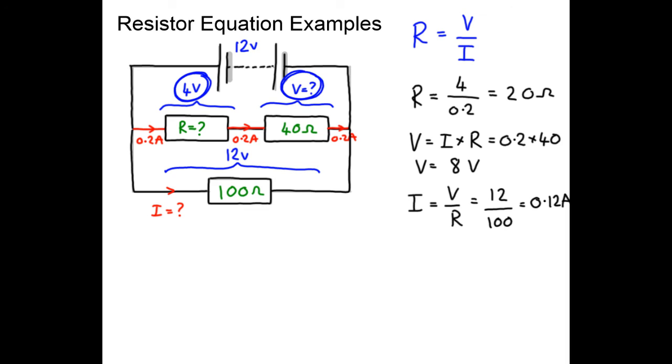How much current flows from the battery? Well, we know the current here is 0.12 amps because we just worked it out, and therefore we know that 0.32 amps flows from the battery. So there are three examples of things you can do with the resistor equation.